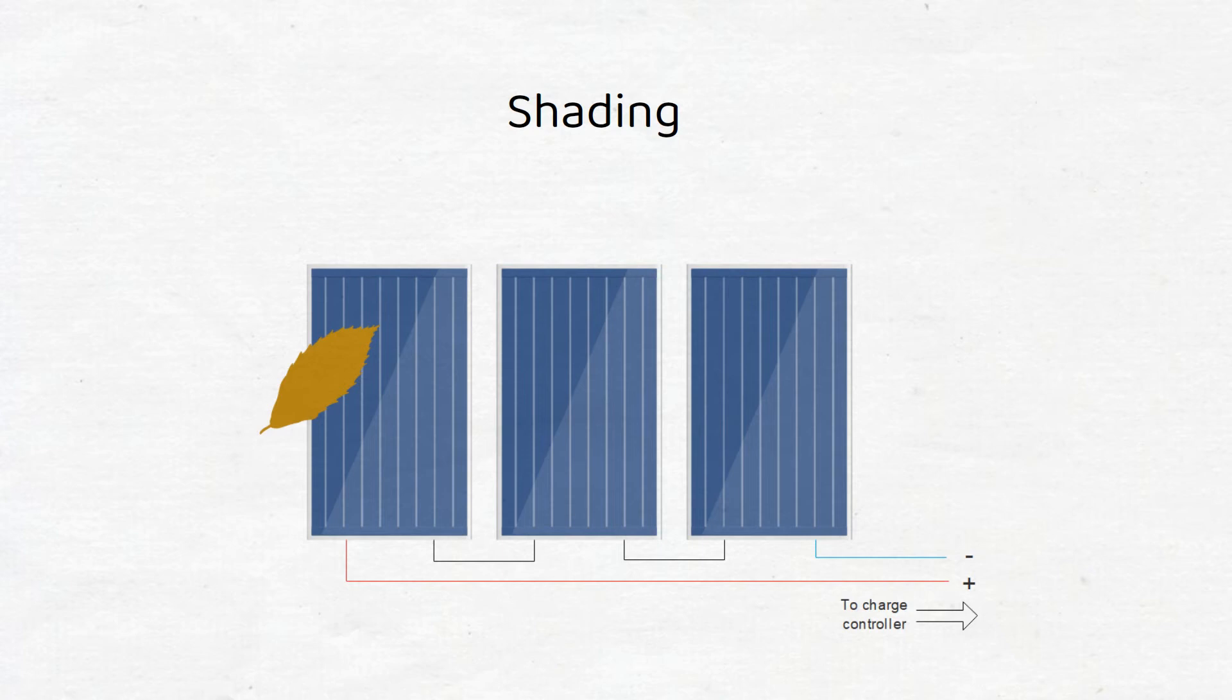If you expect shading to happen, I recommend using smaller panels, a parallel setup or a hybrid setup. In the diagram we can see that the leaf will have a big impact on the total output power of the series connection.